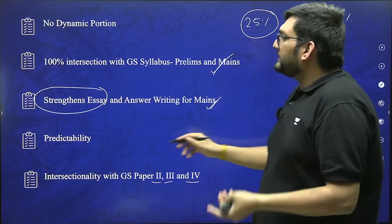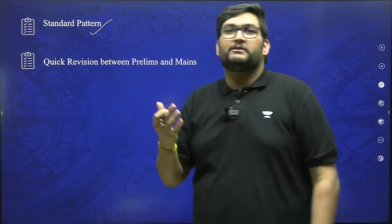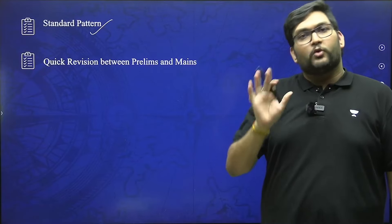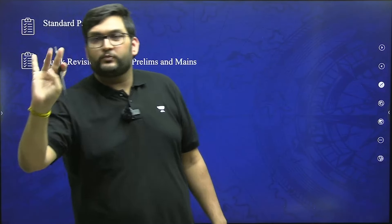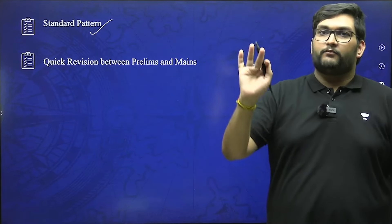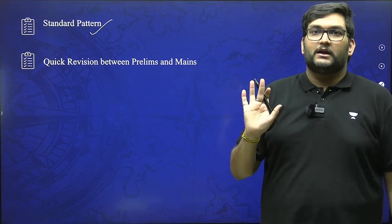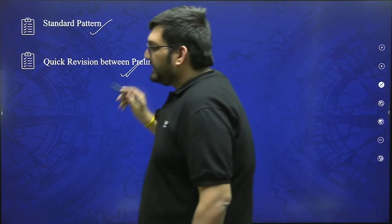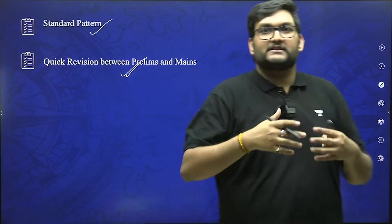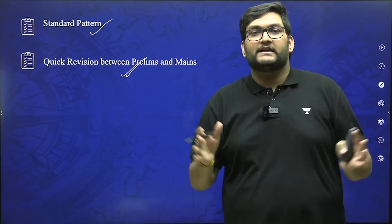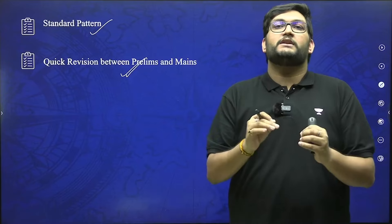Last but not the least is predictability. When it comes to the pattern and predictability, thematics repeat — you already know that from Maurya there will be one question, from Gupta there will be one question, from Indus there will be one question; from world history, one question out of French Revolution, one out of American Revolution. Once you cover this with 360 hours in 150 days, this can be revised by you within just 60 days — which is equally important between prelims and mains.